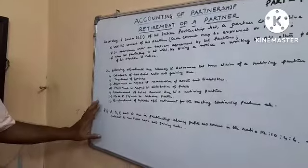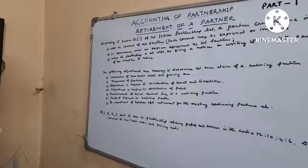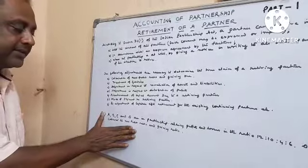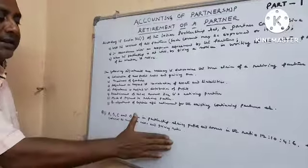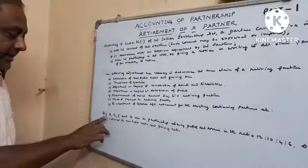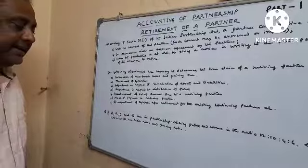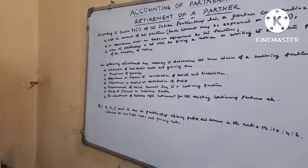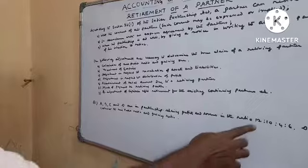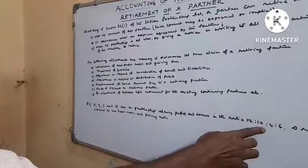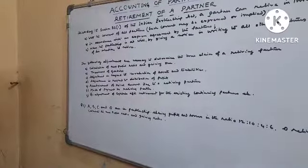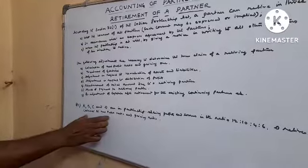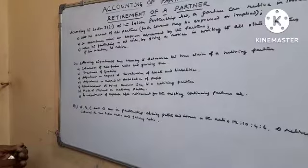Now, a problem has been given regarding retirement to calculate new profit sharing ratio and gaining ratio. A, B, C, and D are in partnership sharing profits and losses in the ratio 12:10:4:6. D retires. Find out the new ratio and gaining ratio.